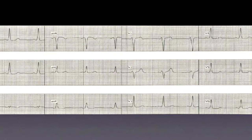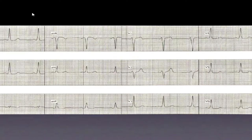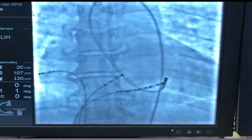You would have seen an ECG like this at some point in your training. Notice the shortened PR interval and the delta wave, which makes it a classic diagnosis of Wolff-Parkinson-White. These are patients accumulated over the years, and this next image shows fluoroscopic anatomy of the catheter placement.